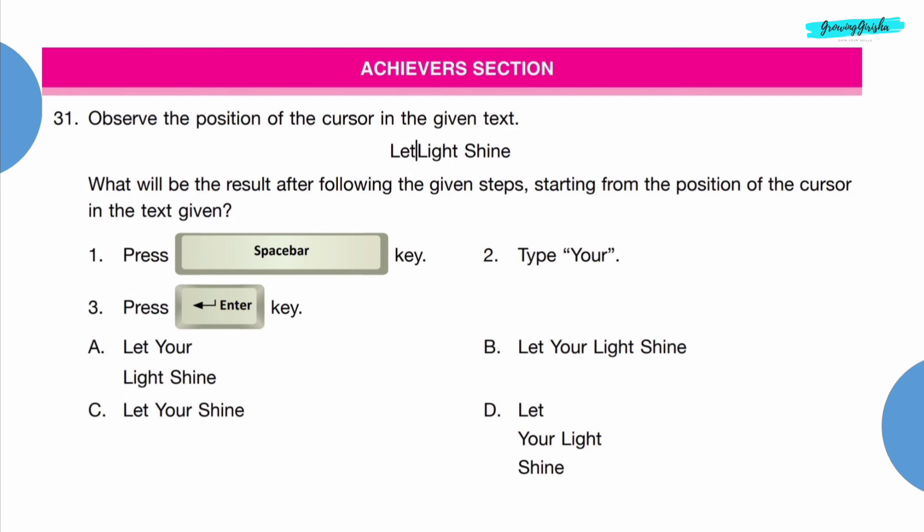Question 31: Observe the position of the cursor in the given text. What will be the result after following the given steps starting from the position of the cursor in the text given? Step 1: Press space bar key. Step 2: Type 'your'. Third: Press Enter key. Option A, 'let your light shine'.